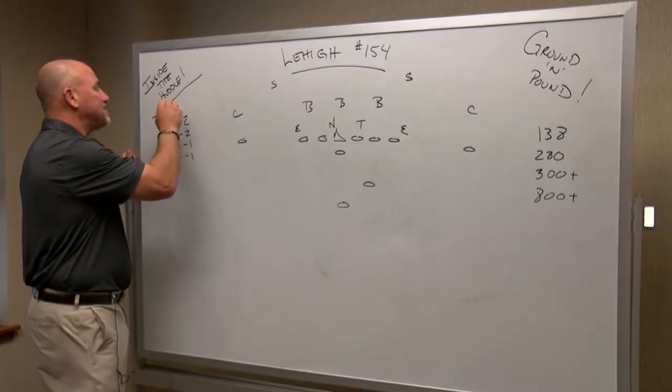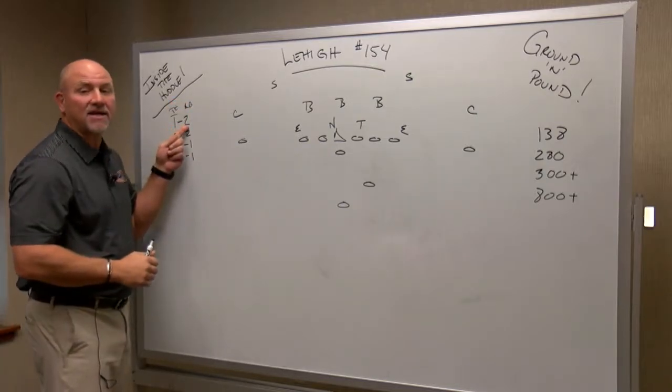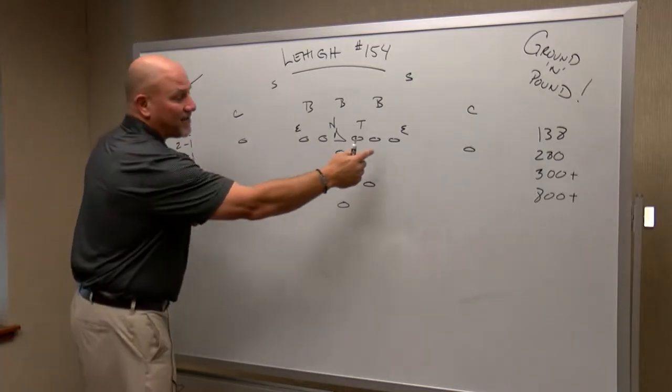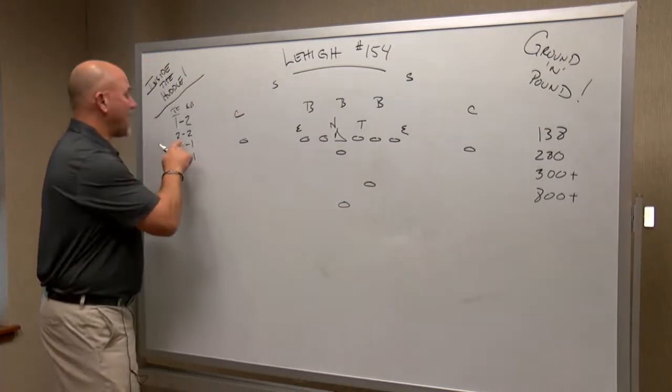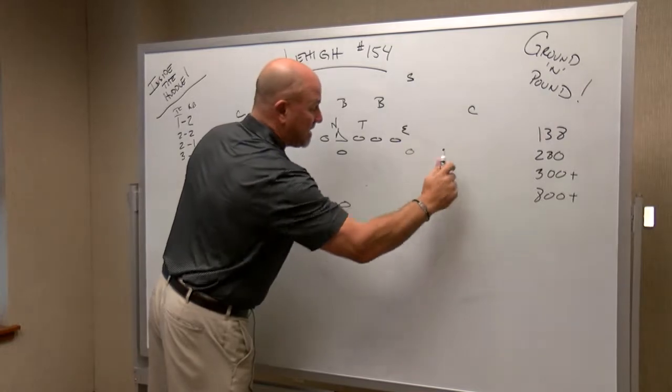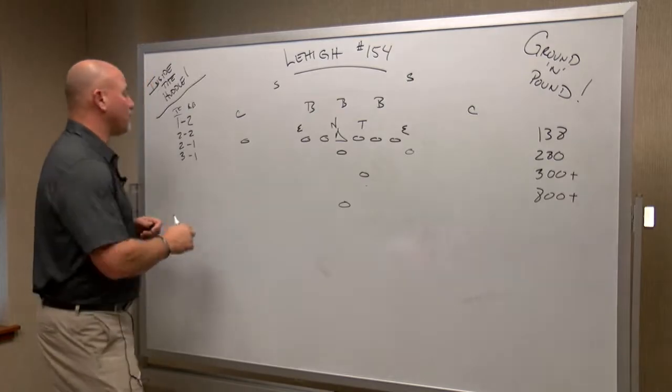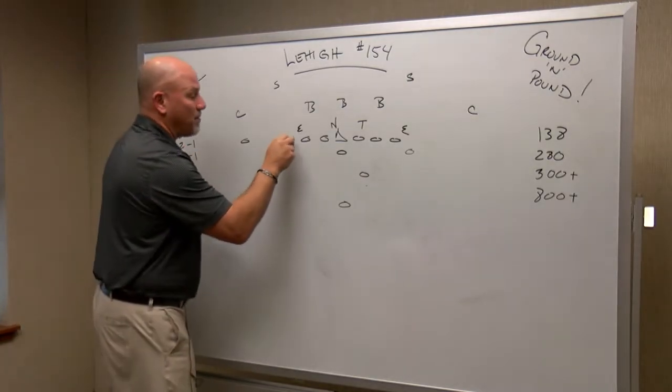If we talk about tight ends and running backs, player personnel: one tight end, two running backs; two tight ends, two running backs. So you could add a tight end, take a wide receiver out, creating those big surface areas to run the football. Two tight ends and one back.